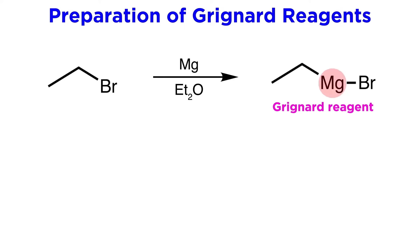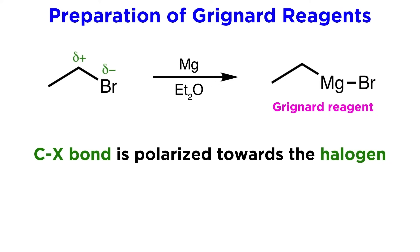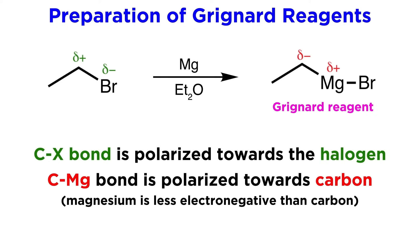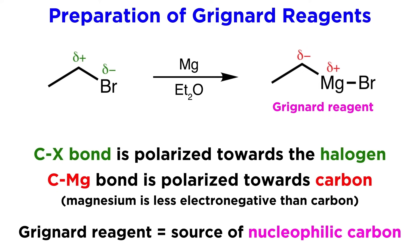So now we have C-MgBr, and this will do something quite interesting. Whereas a carbon-halogen bond is polar with the bond dipole pointing towards the more electronegative halogen, because this carbon is now bound to magnesium — which is less electronegative than carbon — this inverts the polarity of the bond. A carbon bound to a halogen bears a partial positive charge, whereas a carbon bound to magnesium will bear a partial negative charge. That makes this Grignard reagent a source of nucleophilic carbon.